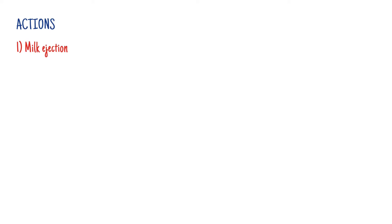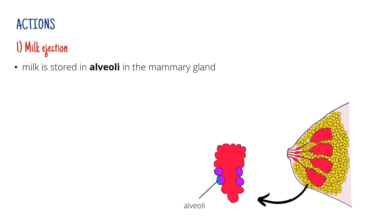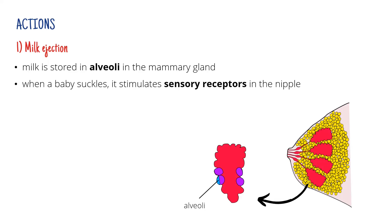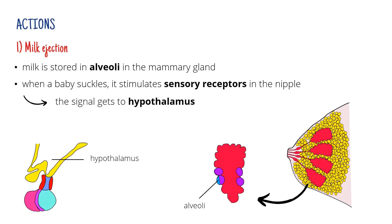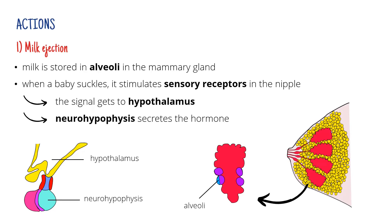The first one is that it's responsible for milk ejection from the breasts. Milk is stored in alveoli in the mammary gland. And when a baby suckles, sensory receptors in the nipple get stimulated. This stimulus is then transported to the hypothalamus, and the hypothalamus causes the neurohypophysis to release oxytocin.